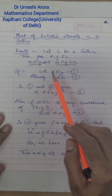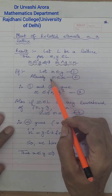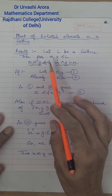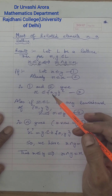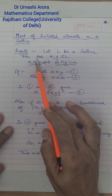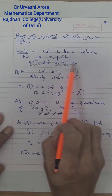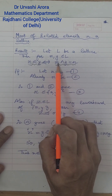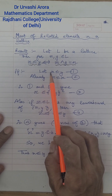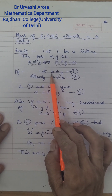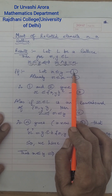Now let me prove this two-way implication. There are two parts in this result. In the first part, we assume that X is related to Y, or X is less than or equal to Y, and we try to show that the meet of X and Y is the element on the left, which is X. So let me suppose for the first part of the theorem that X is related to Y, i.e., X ≤ Y. I have marked this statement as 1.